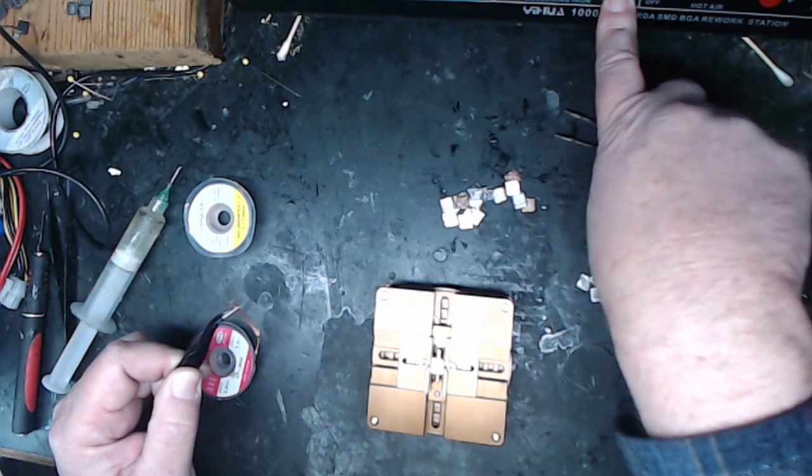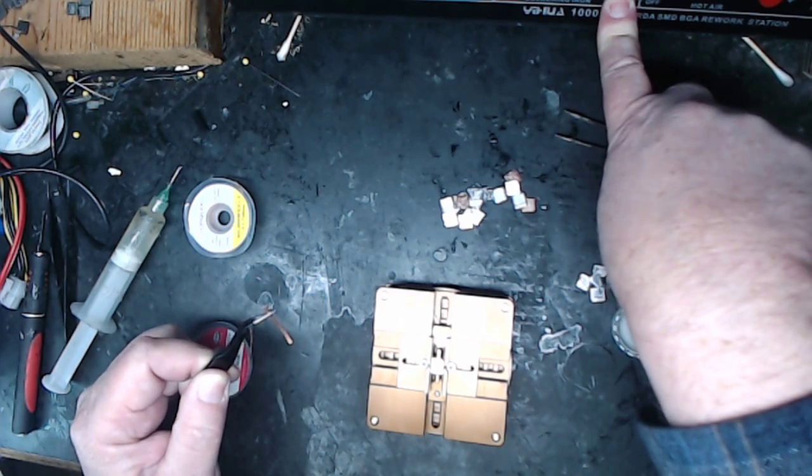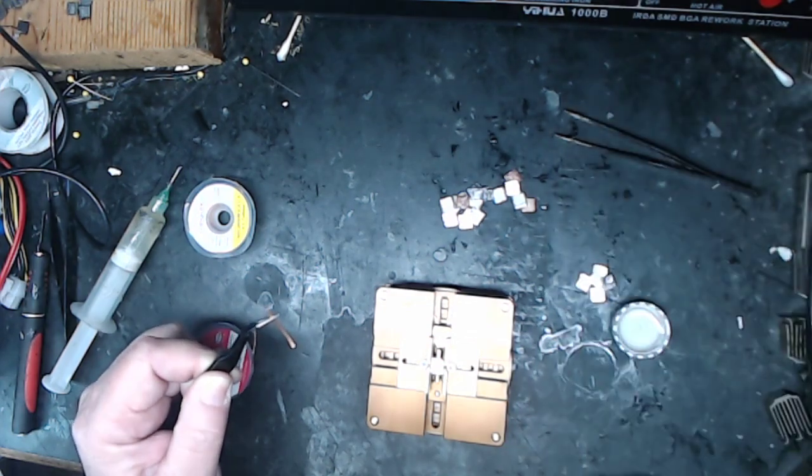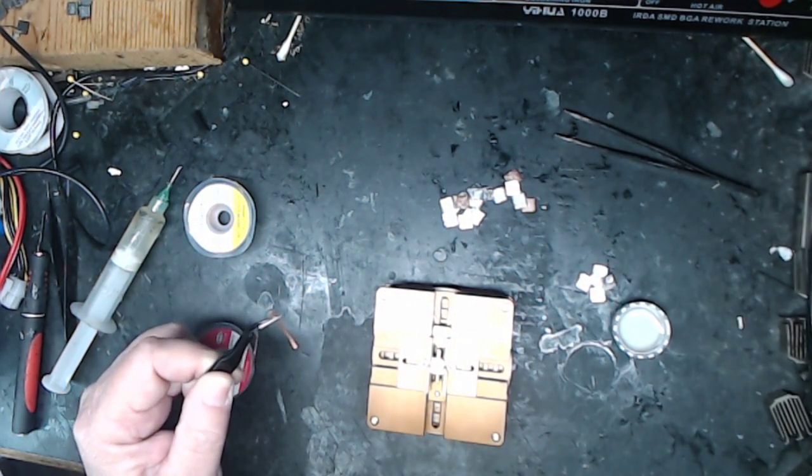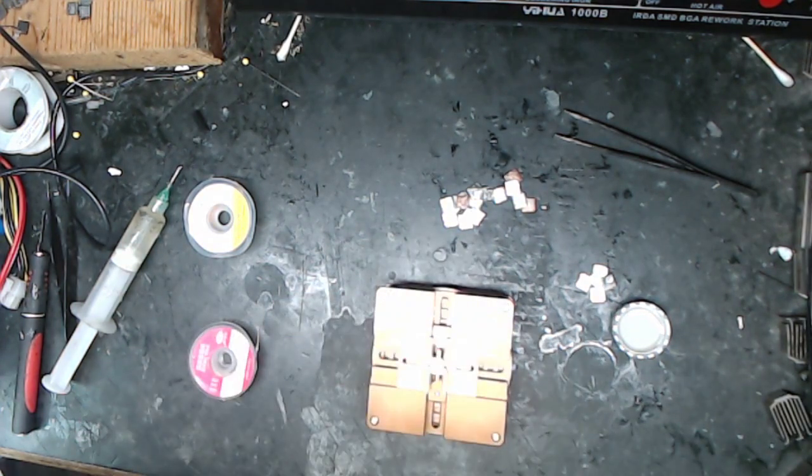I'm going to turn on the soldering iron. I'm going to set it for, let's just do 295, see how that works. And then I'm going to change views. I'm going to get the microscope out. Okay, we'll let that guy warm up nice. You want it kind of completely warm.